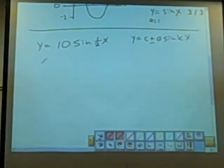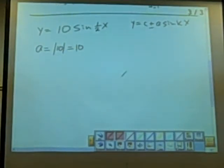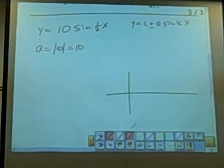We do have an a though, right? And what is that? 10. So we would look at this as the value of 10. That means that our graph will oscillate up and down between, here's 0, 10, and negative 10.